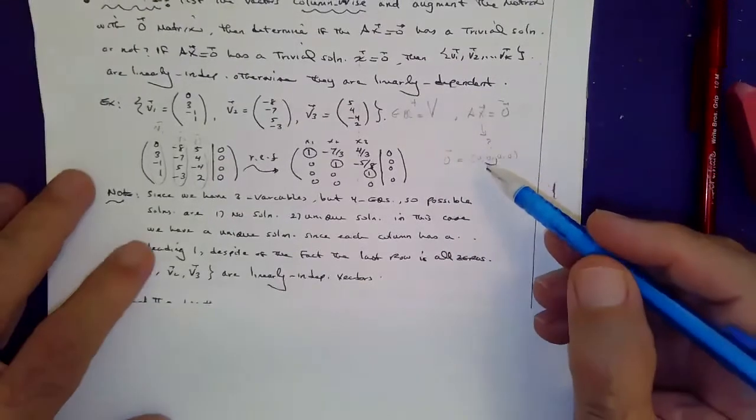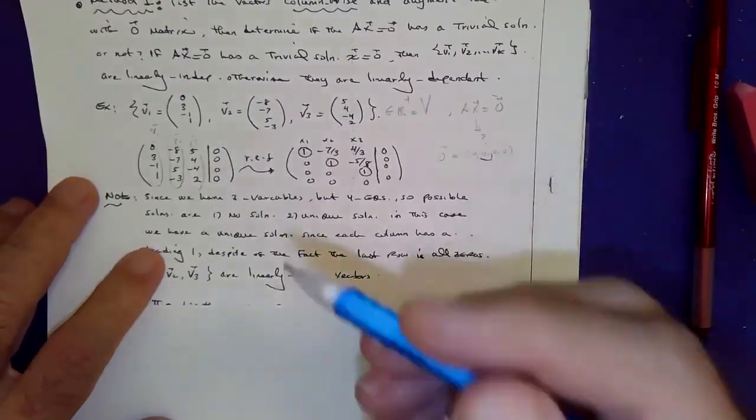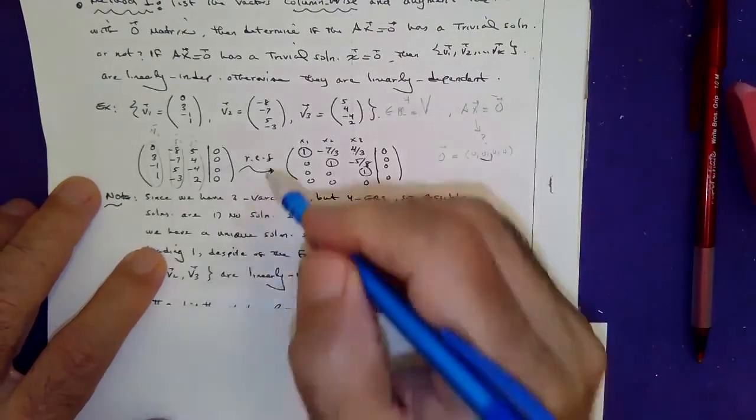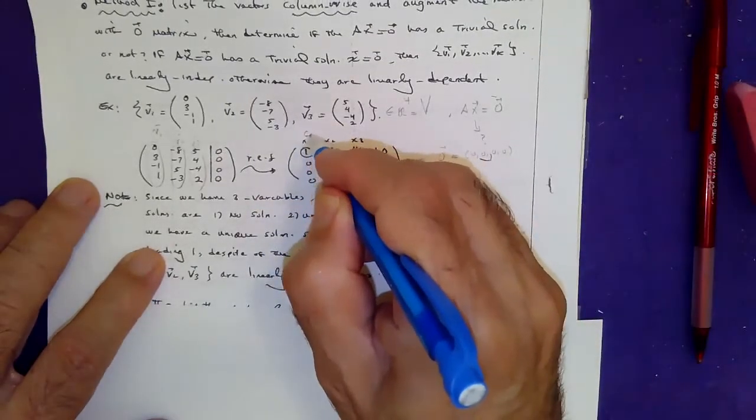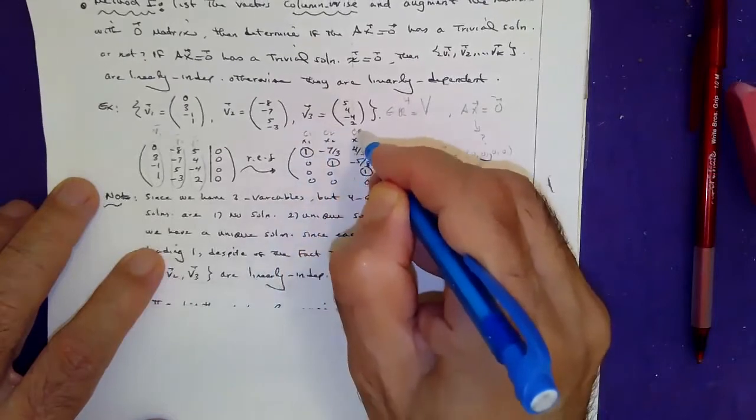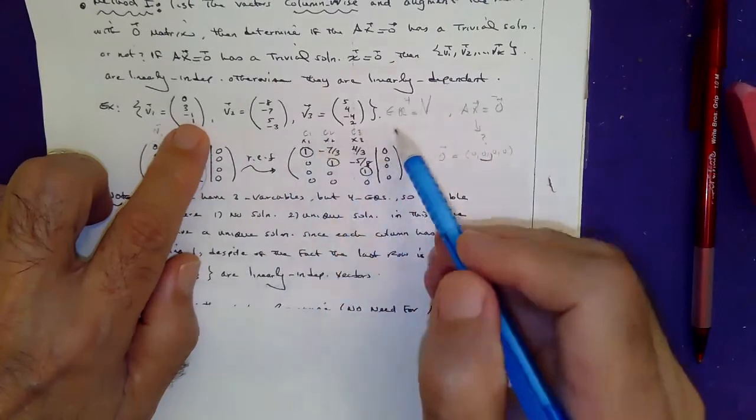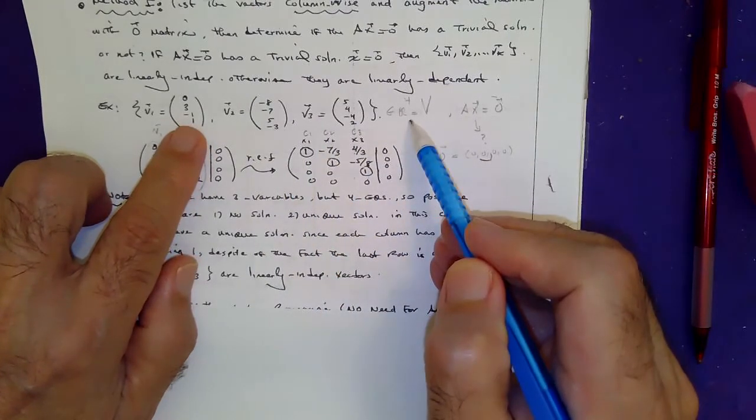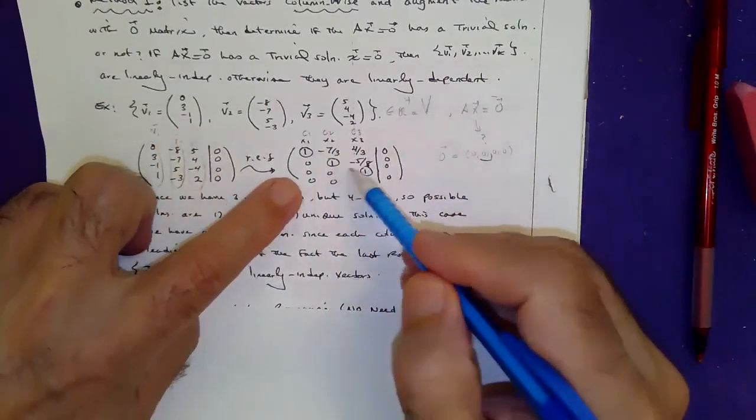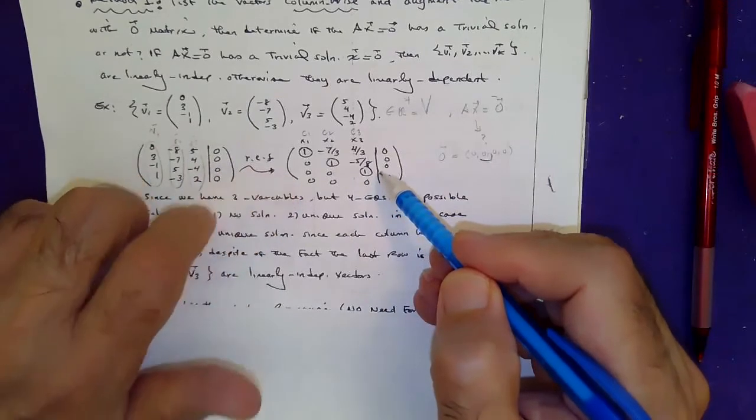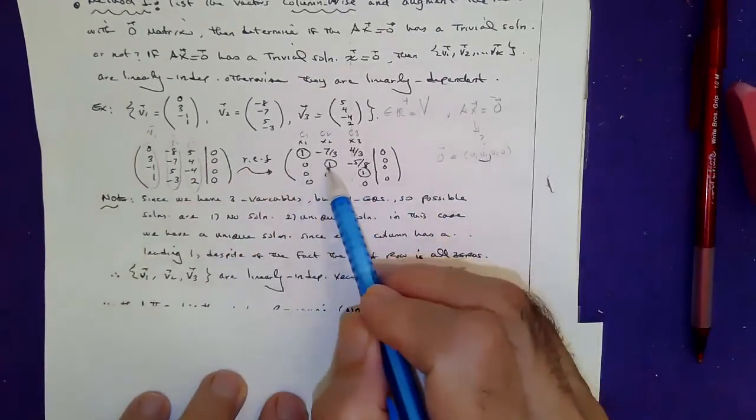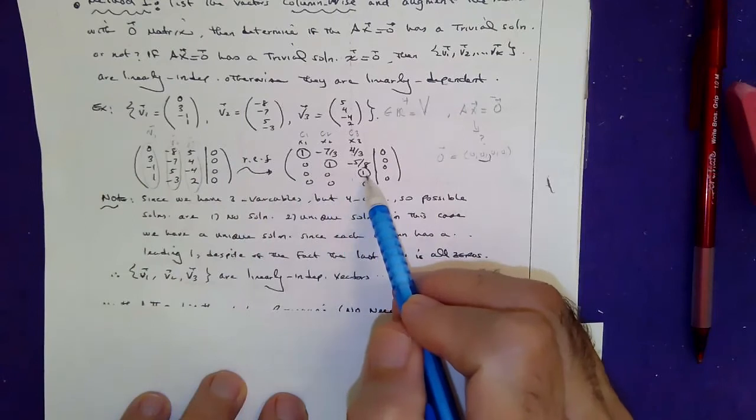So remember, my constants happen to be, you can call this C1, C2, C3. You've got three vectors, but they're in R4. In other words, you've got more equations than unknowns. Well, check this out. The first three rows, they have leading ones.